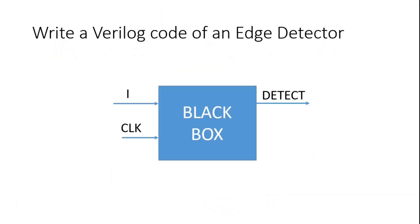Friends, the very first question is on your screen where you have to write a Verilog code of an edge detector. The behavior of an edge detector is: whenever input i changes from 0 to 1 or 1 to 0, the detect pulse should go high for one clock cycle, otherwise it should remain 0. Those who know the answer, please write it down in the comment section, otherwise I am going to reveal its answer.